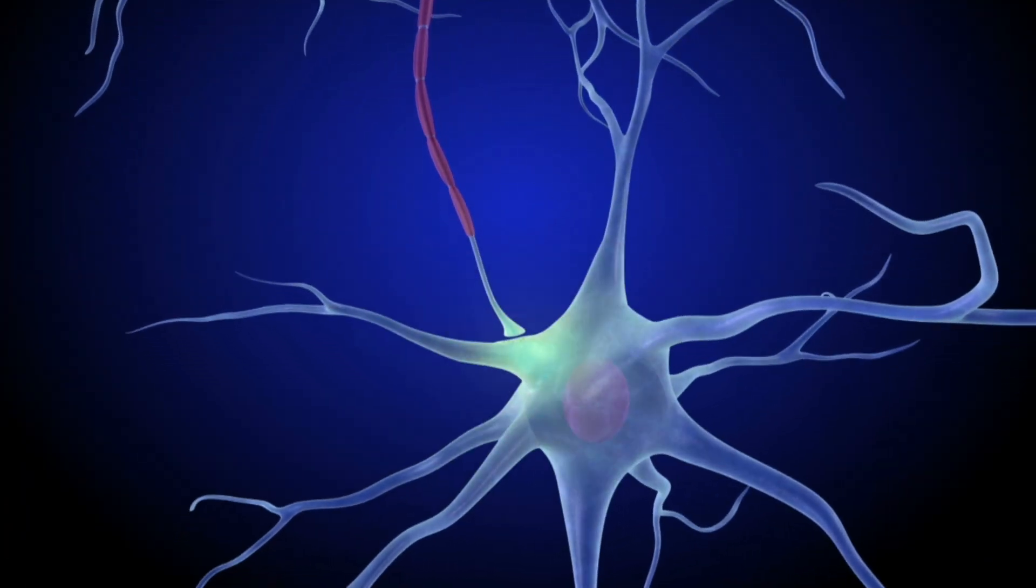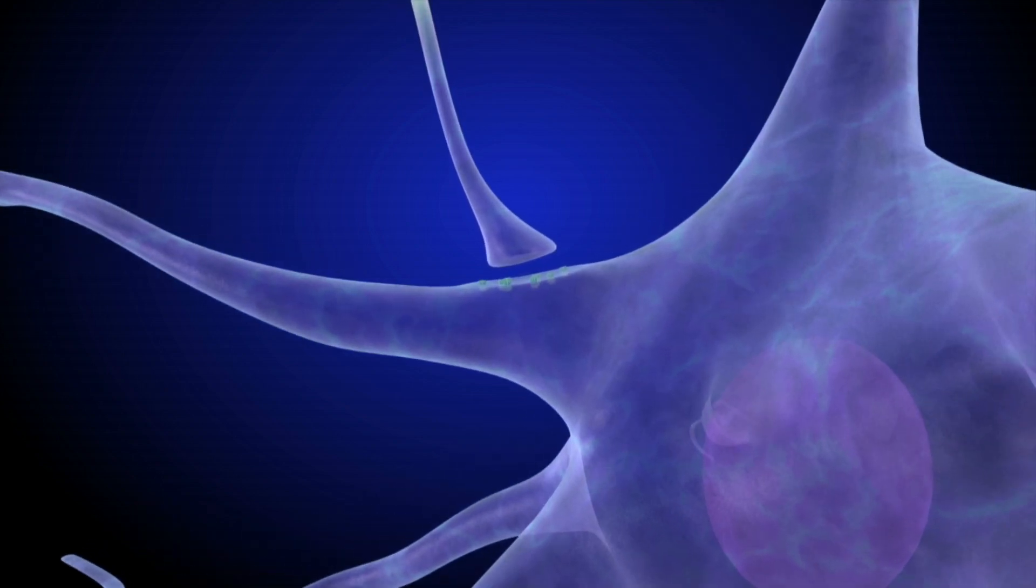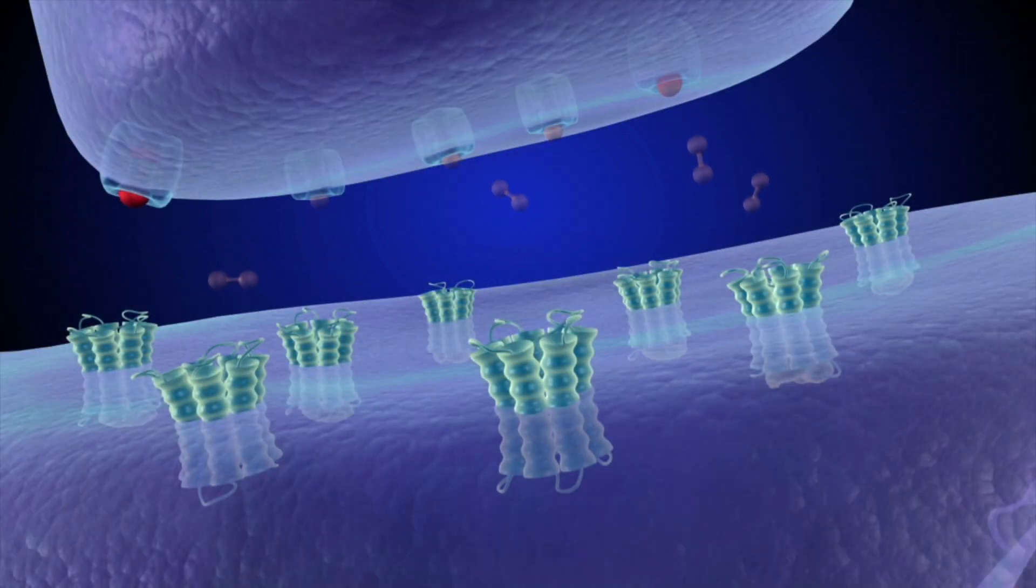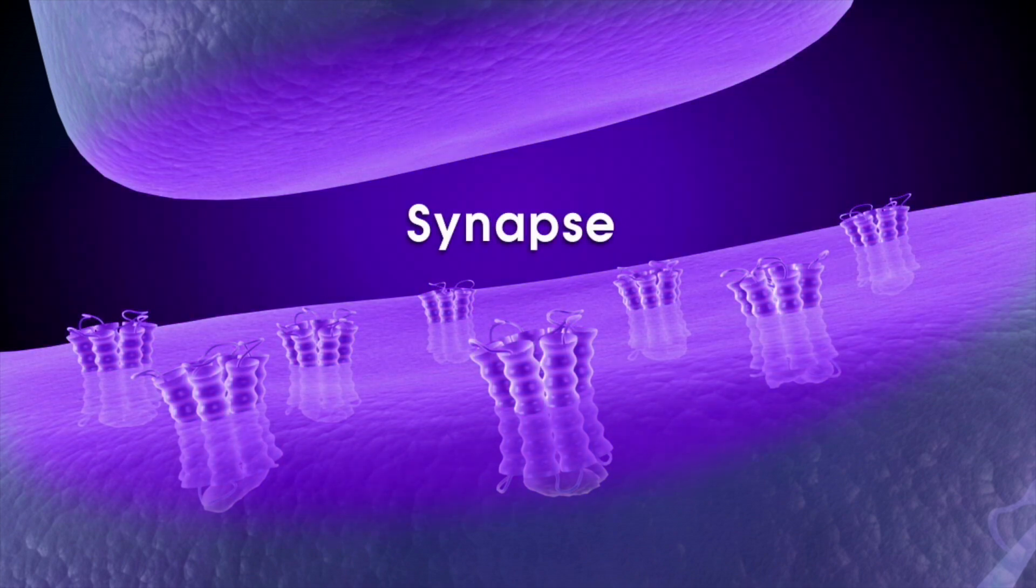Feeling pleasure motivates us to repeat behaviors. When the reward circuit is activated, each individual cell on the circuit relays electrical and chemical signals. The small gap between the sending and receiving cells is called the synapse.